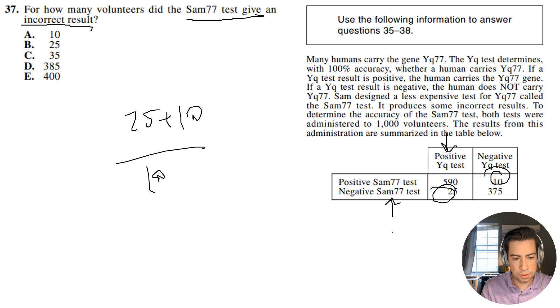Let me make sure that says 25. Yeah, 25. 25 plus 10. Wait, you don't need to divide by 1,000. You just need to add them up. It says for how many. So it is going to be 35. Our answer is going to be C.